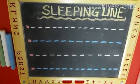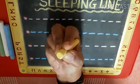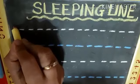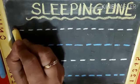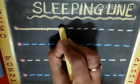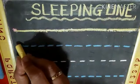Now hold the chalk like this. Put it here and let's join the dotted lines to make a sleeping line. Let's begin.